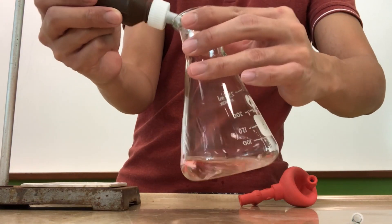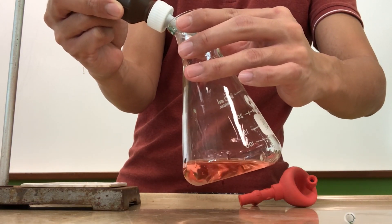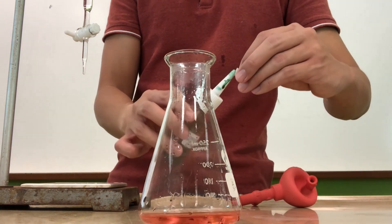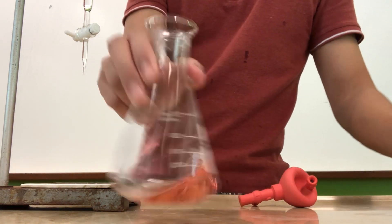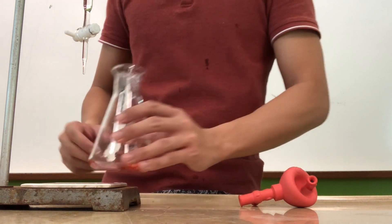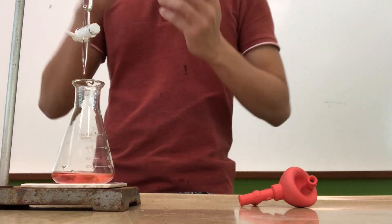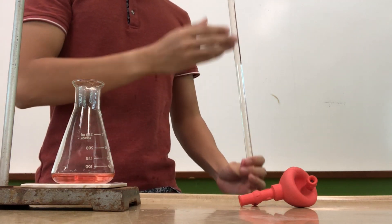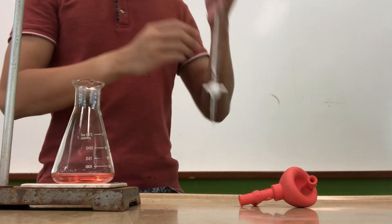So in this experiment, we are using the indicator called screened methyl orange. Screened methyl orange is different from methyl orange in the sense that it is actually red in color within an acid, but the color change that it gives at the end point is different. In fact, screened methyl orange actually gives a more accurate color change that's easier to identify as compared to methyl orange.